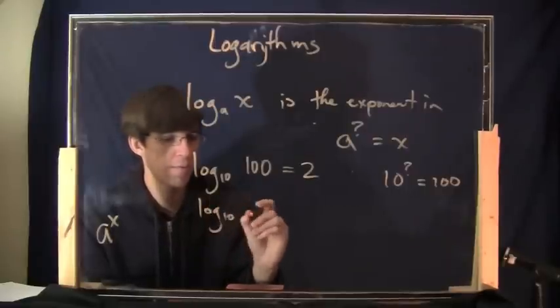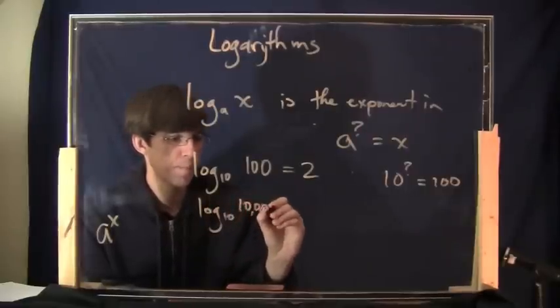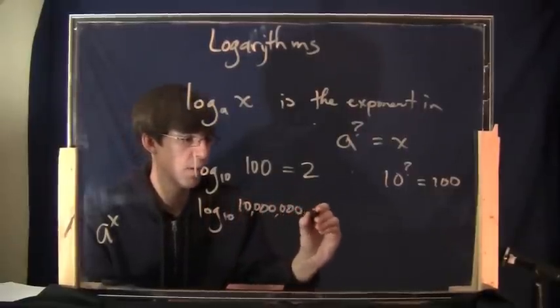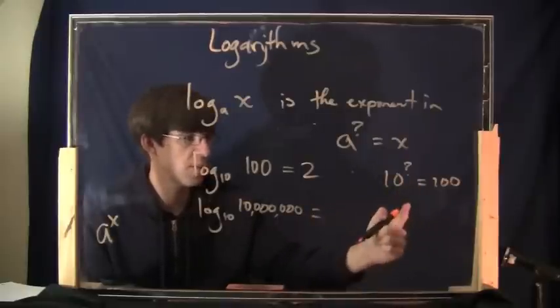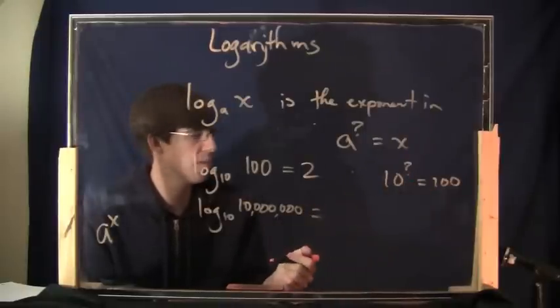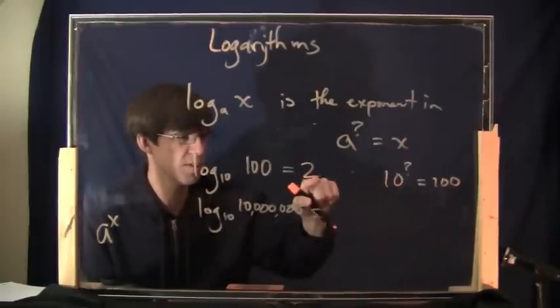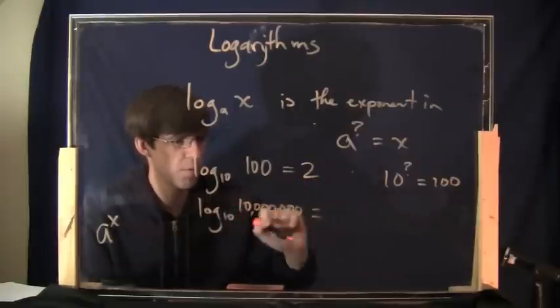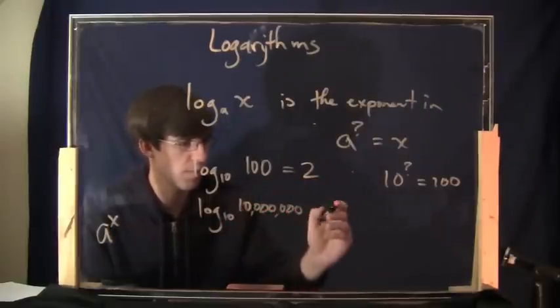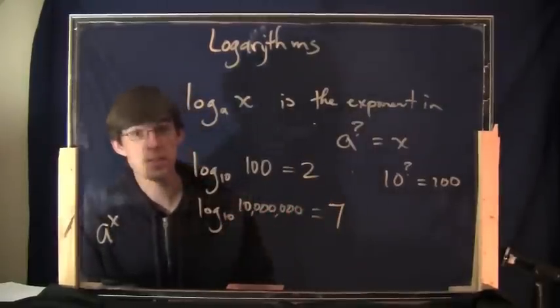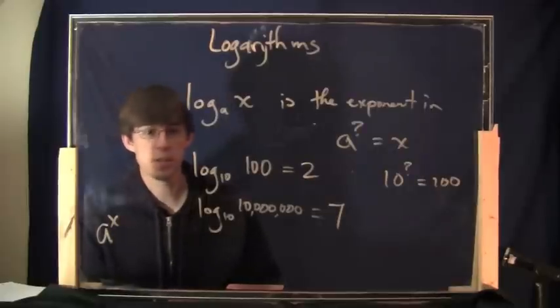What is the log base 10 of, say, 10 million? For the same reason, you're asking yourself 10 to what power equals 10 million? If you think about it, actually, this number here is just going to be the number of zeros. 1, 2, 3, 4, 5, 6, 7. So that's the log base 10 of 10 million is 7, right?